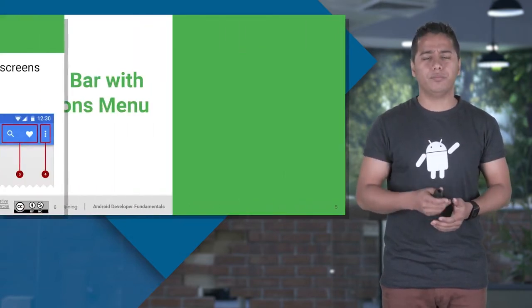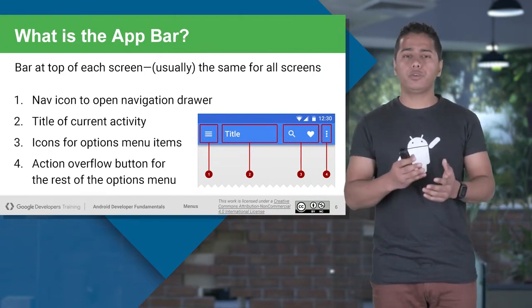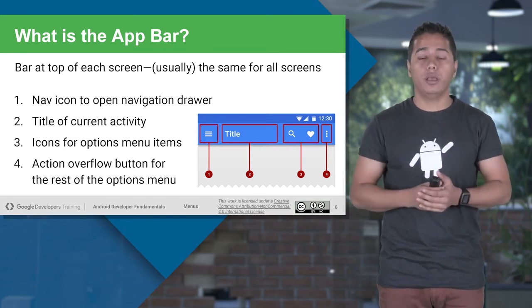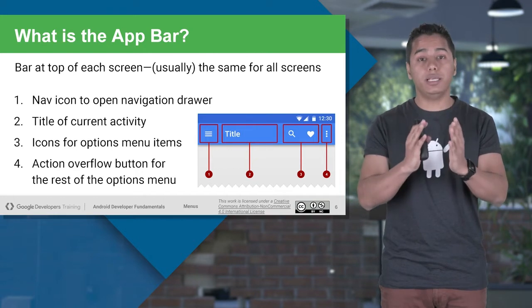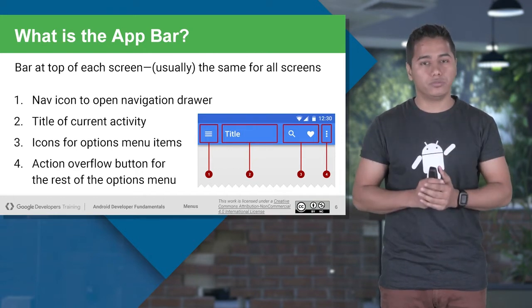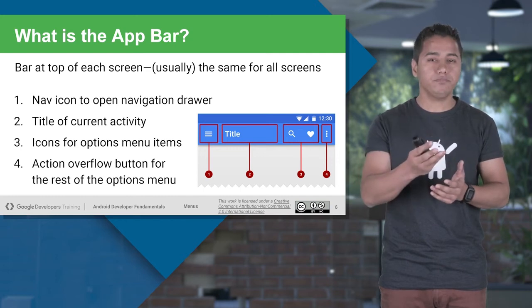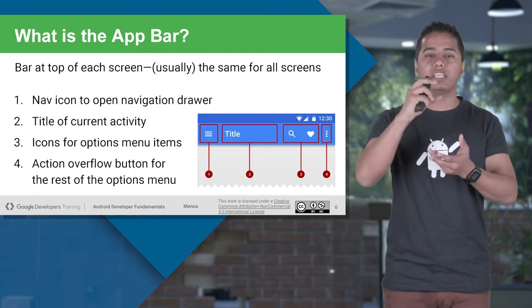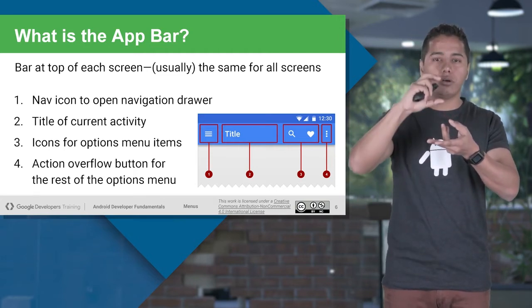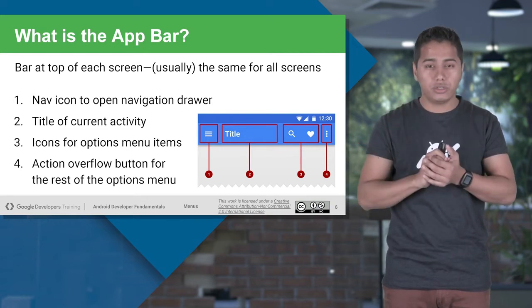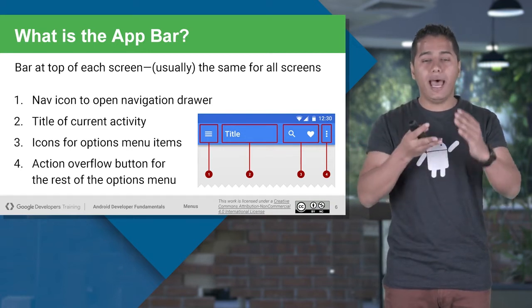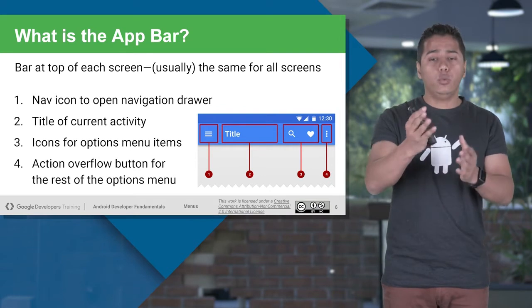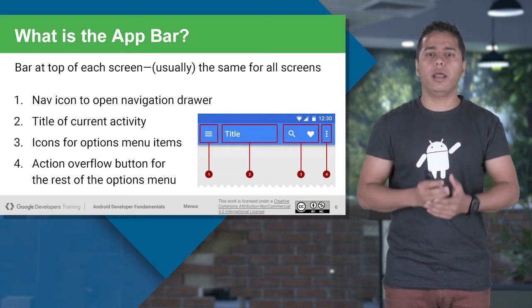Let's discuss each one briefly. Option menu is associated with an activity — each activity has one option menu at the top, and each activity can only have one option menu. Option menu is one per activity. You can also have the option menu on your action bar. The action bar is the bar at the top of your application where you can see the title of your application, a navigation drawer button, and your option menu directly placed on it.